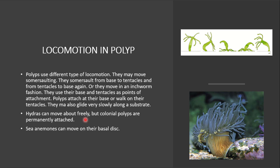Hydra is a polyp form and can move freely. But polyps that are in colonies don't move much — they only do gliding or crawling. For example, sea anemones crawl on their own basal disc and move a little bit. So that was about locomotion in polyps.